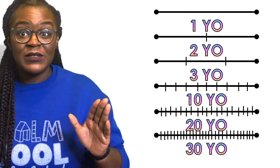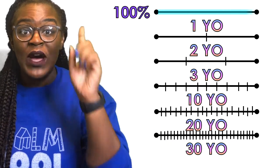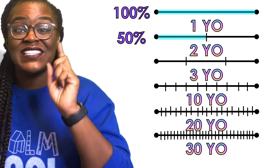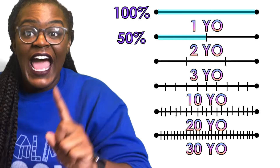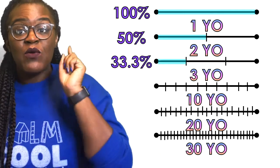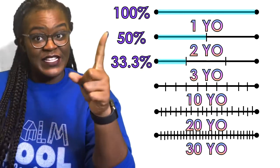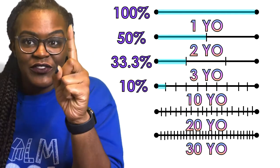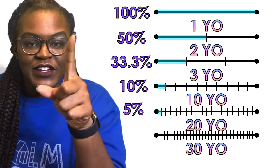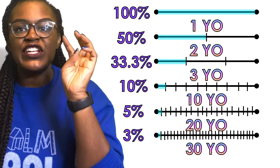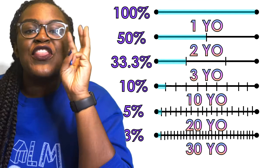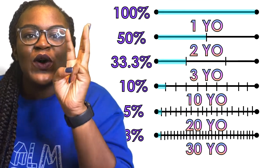So at one years old, the entire life, the one year represents 100% of your life. At two years old, one year represents 50% of your life. At three years old, that one year represents 33.3% of your life. At 10 years old, 10% of your life. At 20 years old, 5% of your life. At 30 years old, approximately, one year represents 3% of your life.